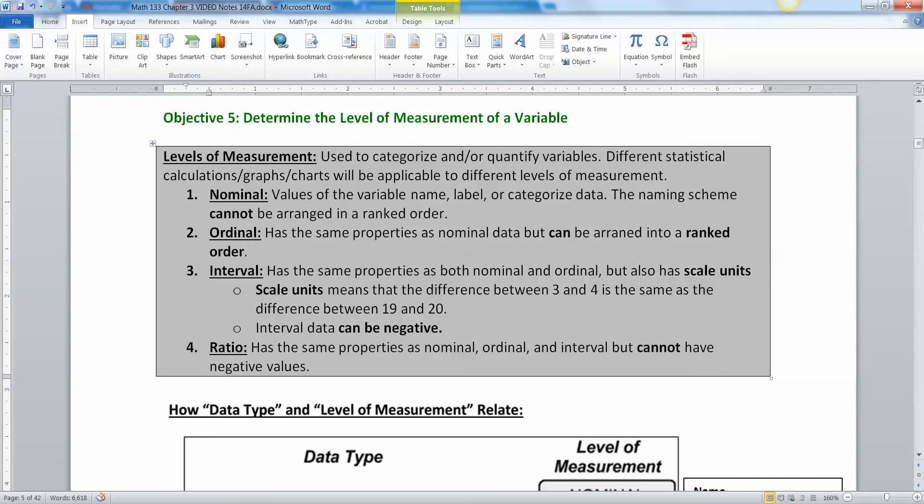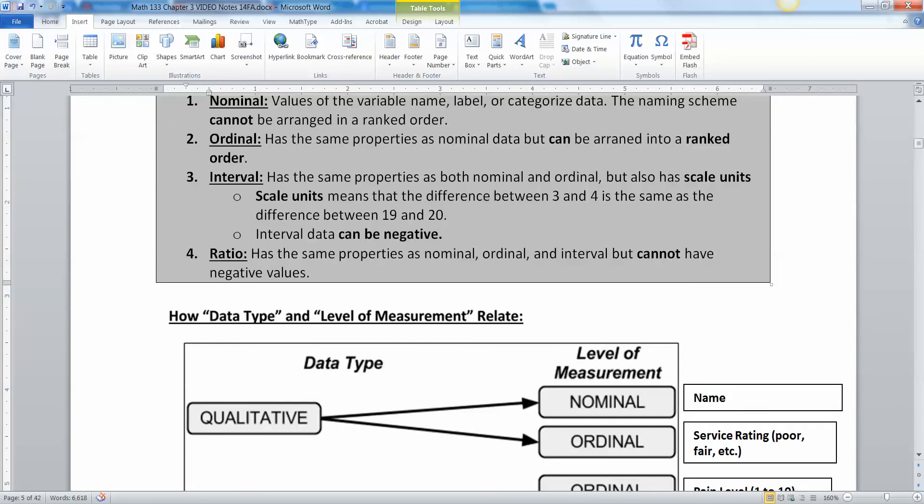Interval has the same properties as nominal and ordinal, but also has scale units. In other words, it's numbers, and when you're looking at numbers, the difference between three and four is the same difference between 19 and 20. It's a difference of one. A three-year-old to a four-year-old, that's a difference of one. You have scale units, and interval data can be negative.